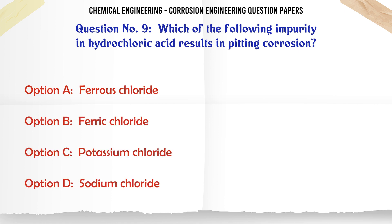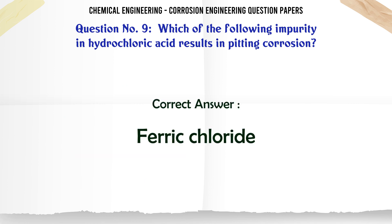Which of the following impurities in hydrochloric acid results in pitting corrosion? A. Ferrous chloride. B. Ferric chloride. C. Potassium chloride. D. Sodium chloride. The correct answer is: Ferric chloride.